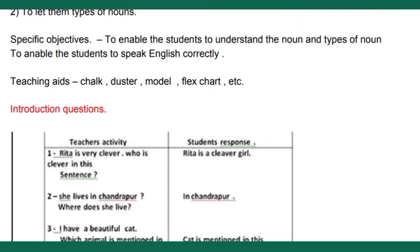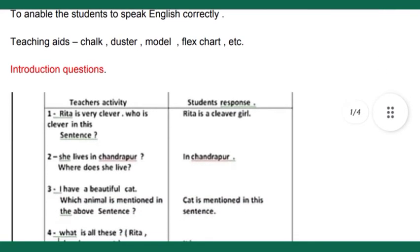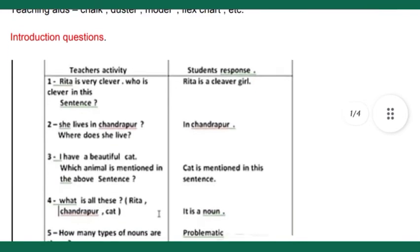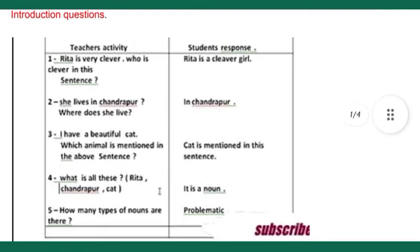The specific objectives also include enabling students to speak English correctly. Now here you can see the teaching aids section — we have to mention whatever teaching aids we are going to use, such as chalk, duster, model, flex chart, etc.